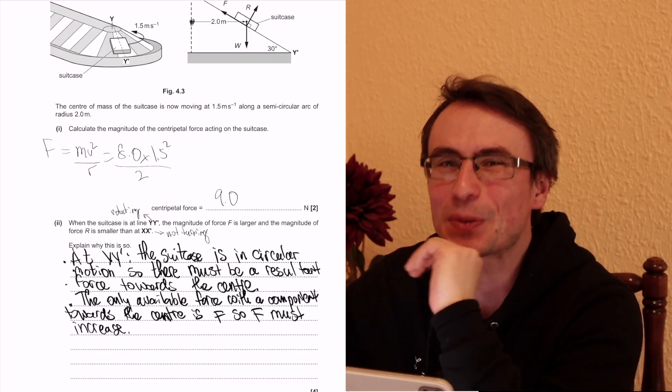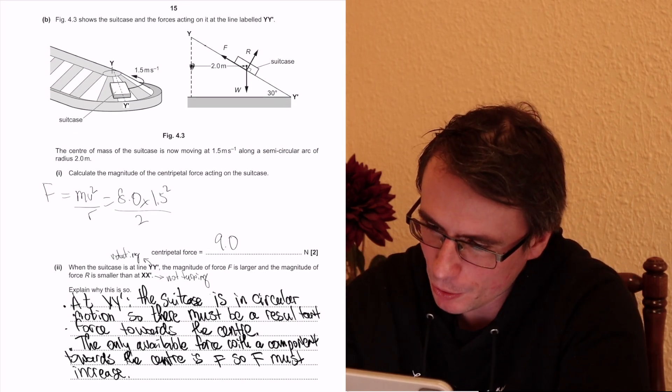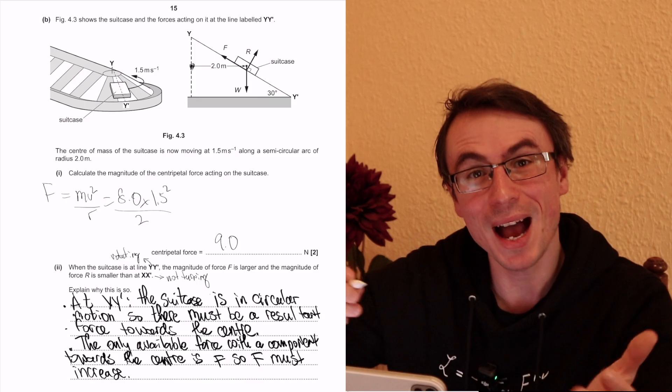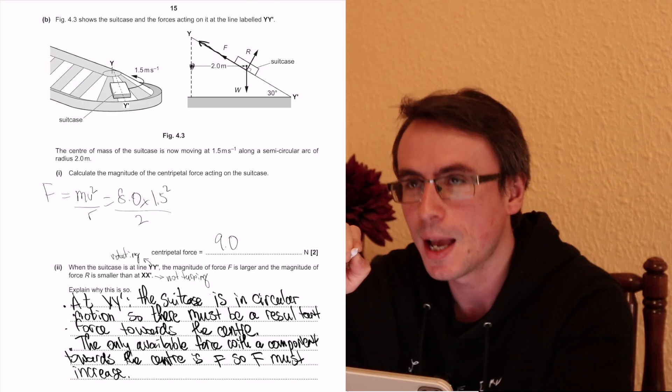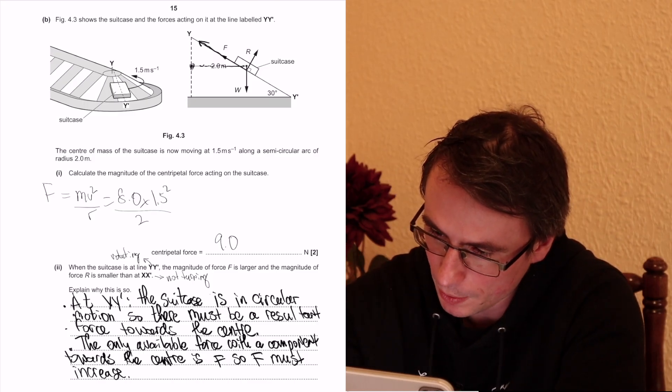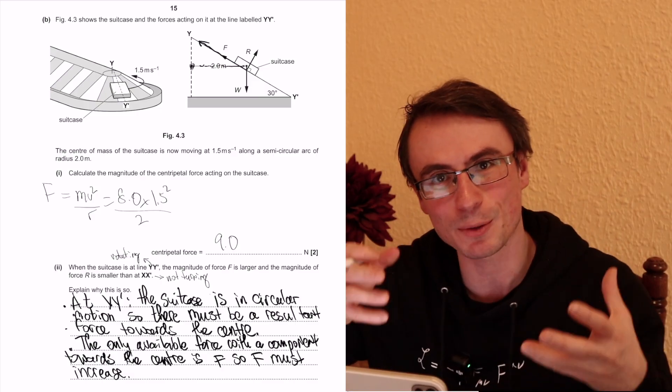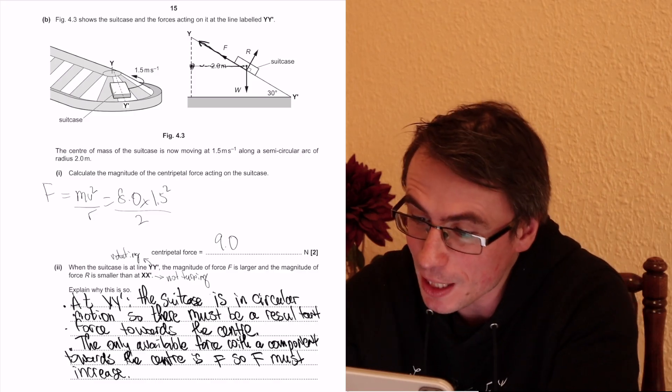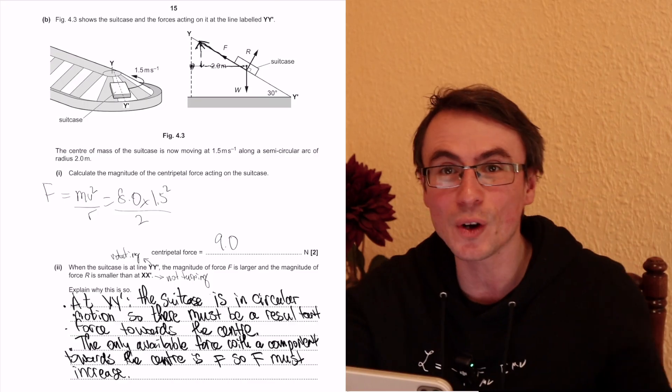Now here is where it gets really tricky. So let me try and draw this. Imagine that F was even larger, so something like this. If F becomes really really big, the horizontal component of F will also increase, meaning that there's going to be a greater centripetal force and the suitcase will be moving faster. But if the horizontal component of F increases, so does the vertical component.